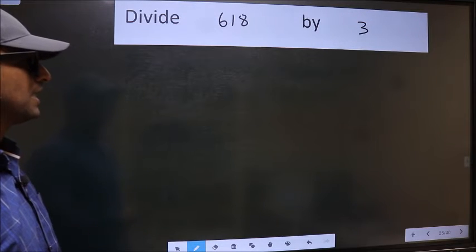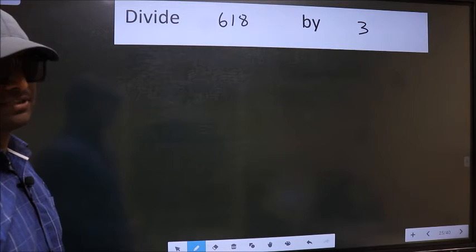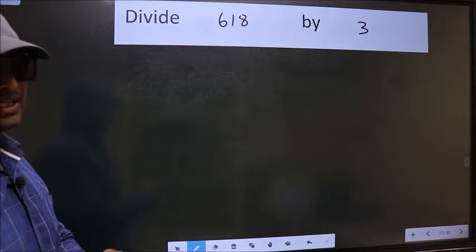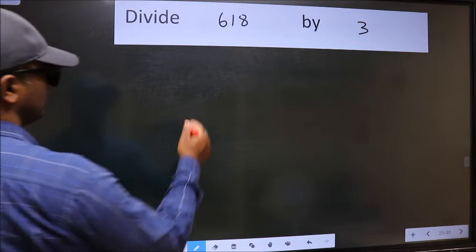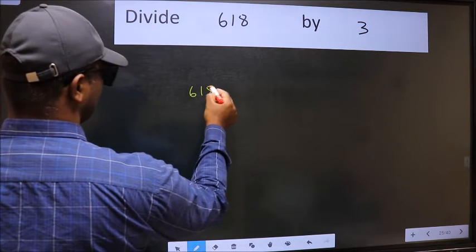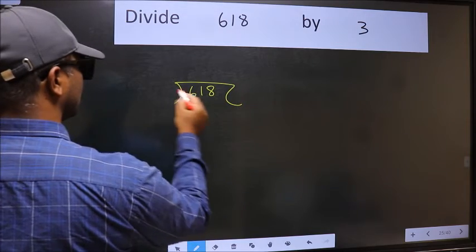Divide 618 by 3. To do this division, we should frame it in this way: 618 and 3 here.